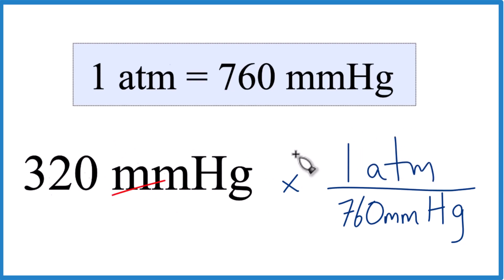Now, when we multiply, we have millimeters of mercury on the top and bottom. They're gone. We're left with atmospheres. That's what we're looking for.